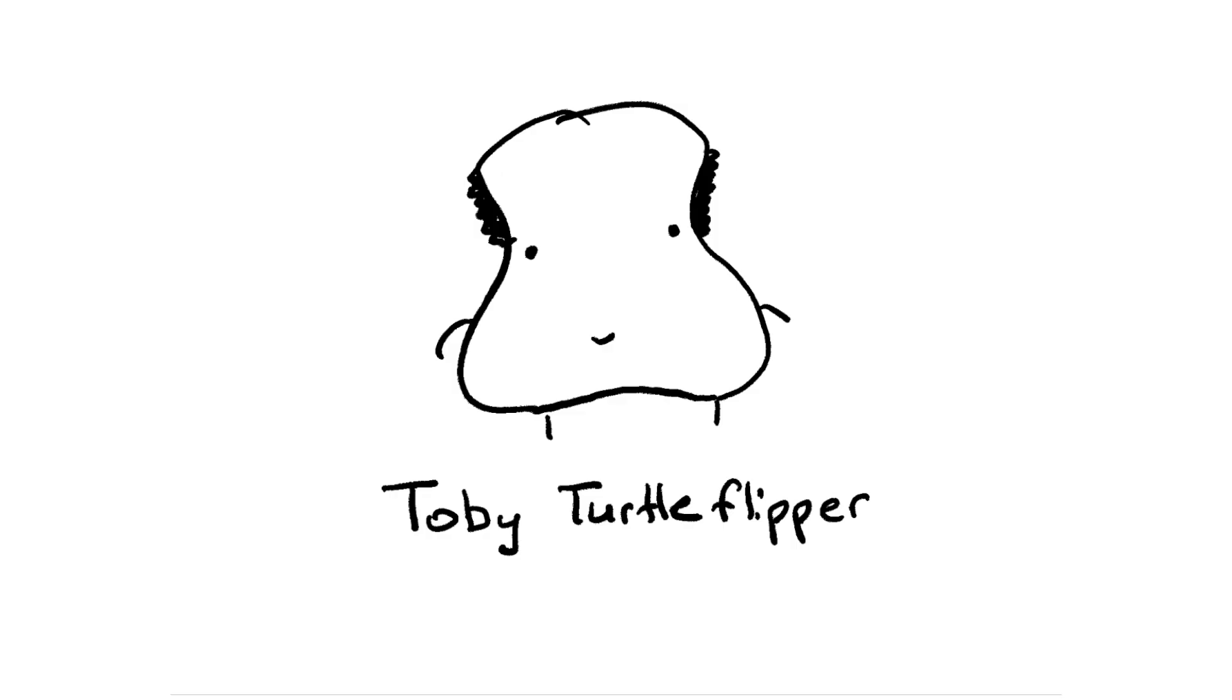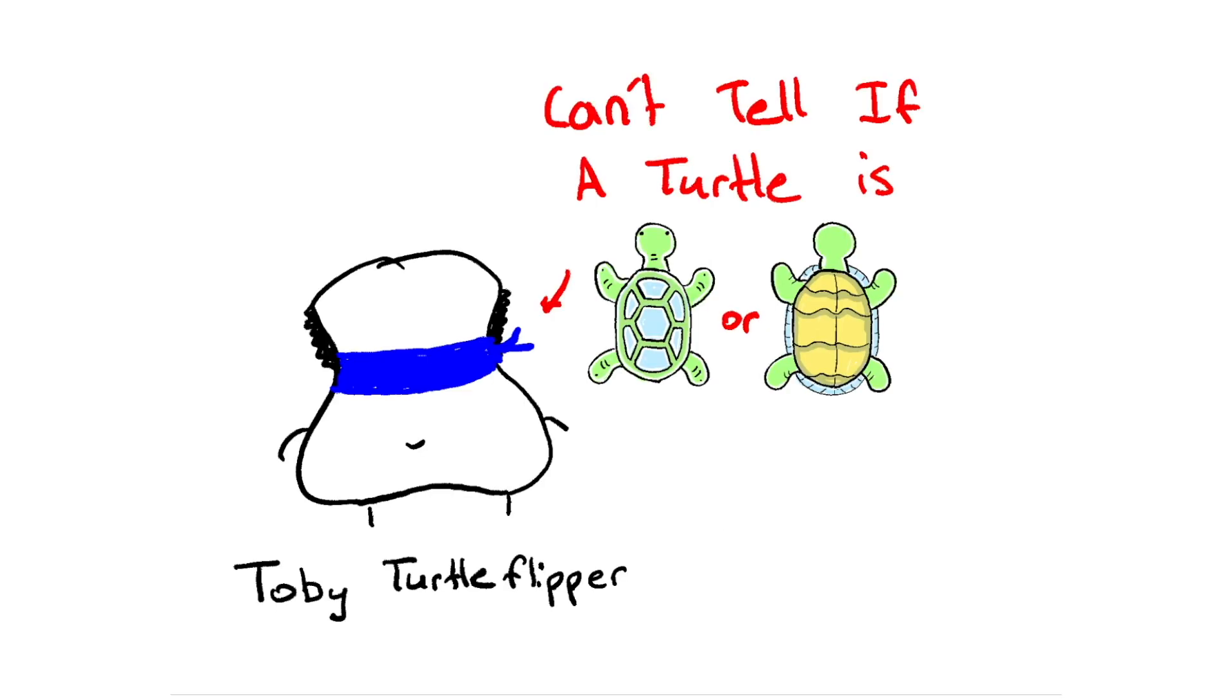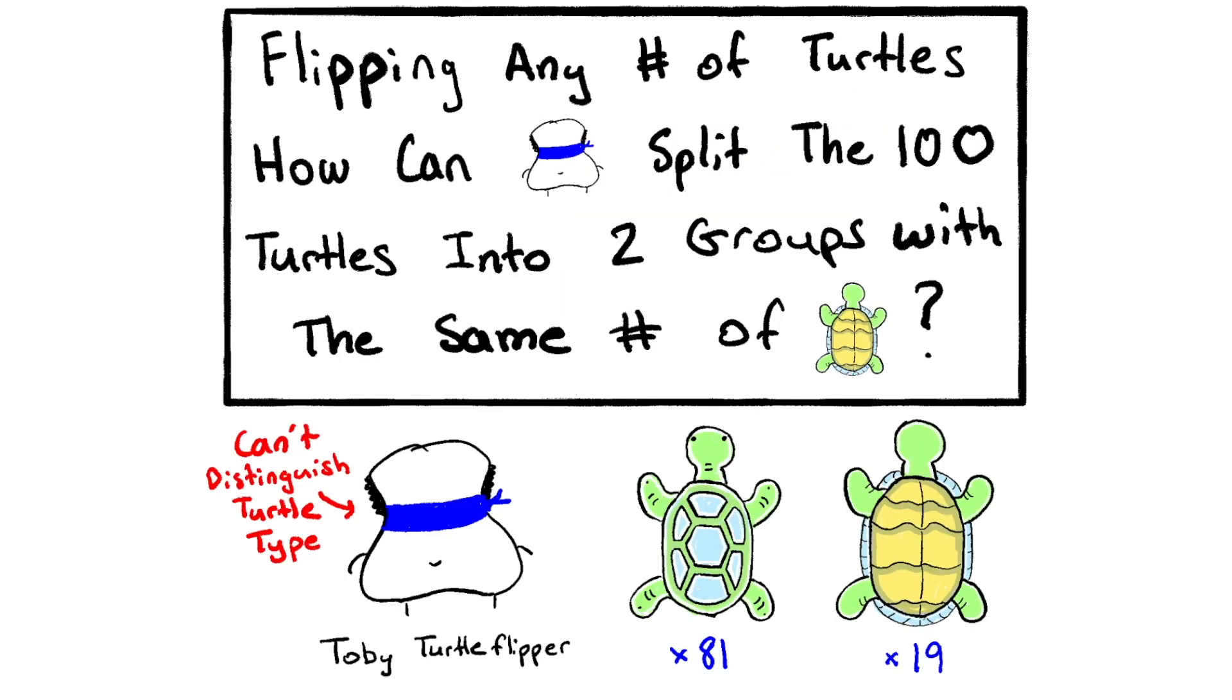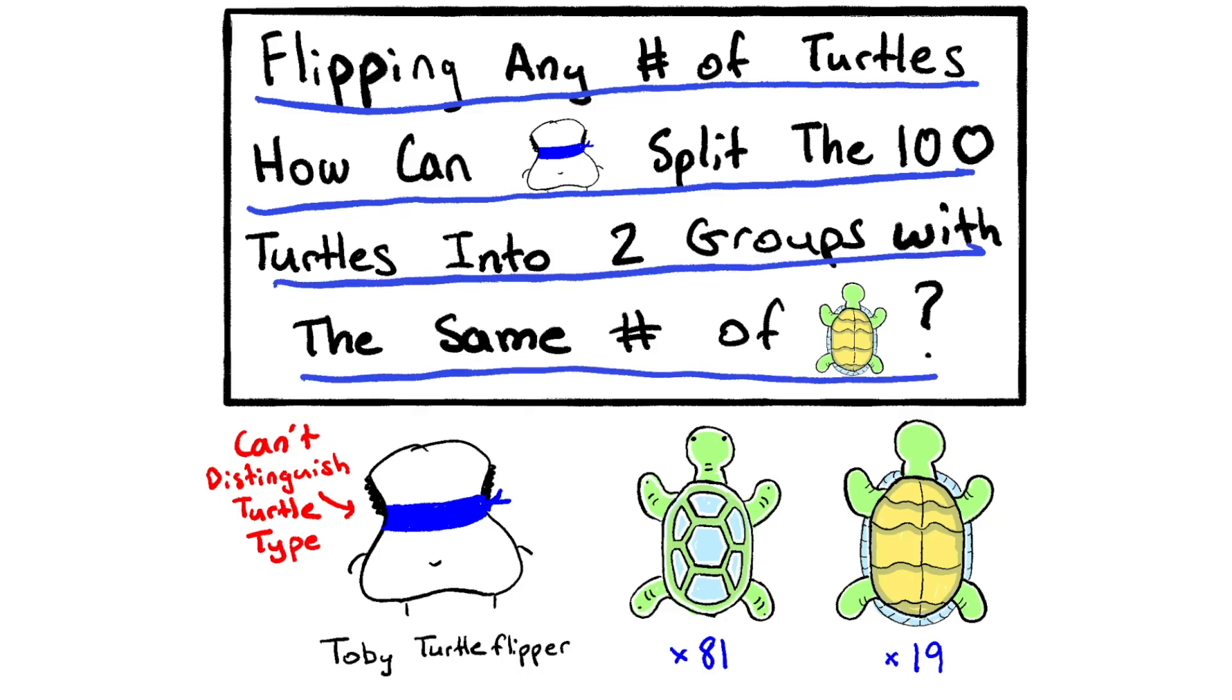Toby Turtle Flipper arrives one day wanting to flip some turtles, but he's wearing a blindfold, so he can't tell if a turtle is shell up or belly up. Now our question for today is, flipping any number of turtles, how can Toby split the 100 turtles into two groups with the same number of belly up turtles? Let's see if you can figure it out.